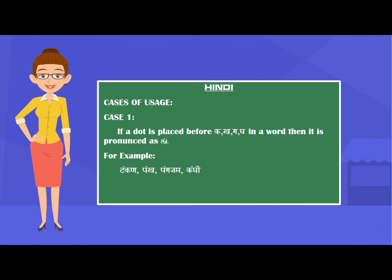Case 1: If a dot is placed before K, K, G, G in a word, then it is pronounced as 'ing'. For example: Tunkan, Punk, Pungajam and Kangi.